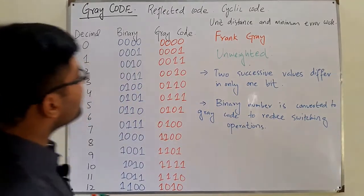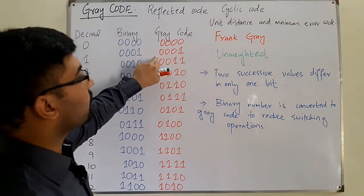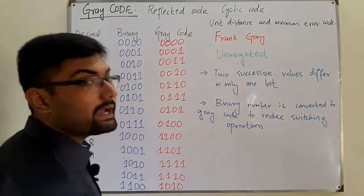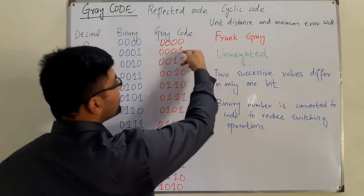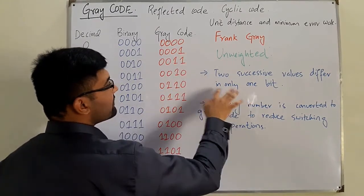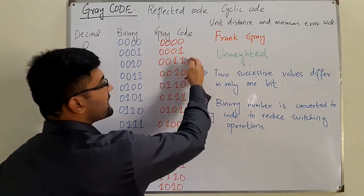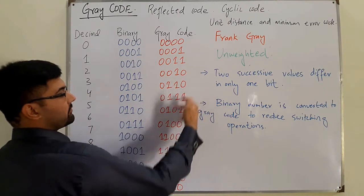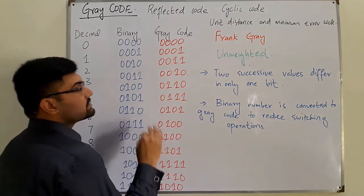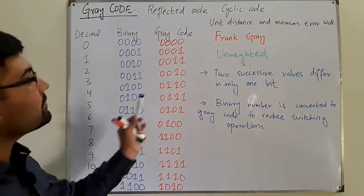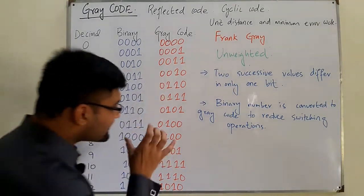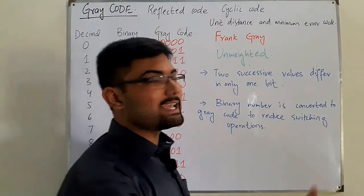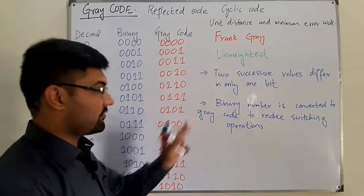Looking at the gray code table: for zero and one, only one bit is different. For one and two, again only one bit is different. For two and three, three and four, four and five, five and six — only one bit is different in any two successive values, for example 9 and 10, 15 and 16, 22 and 23.